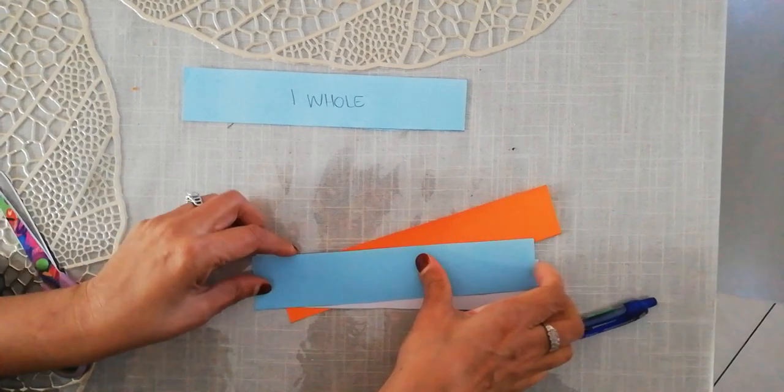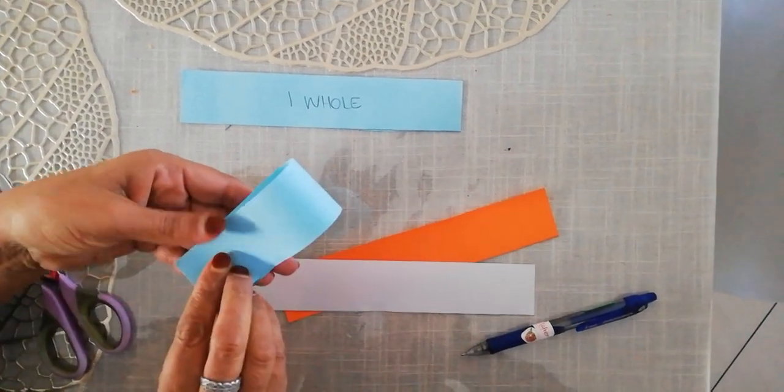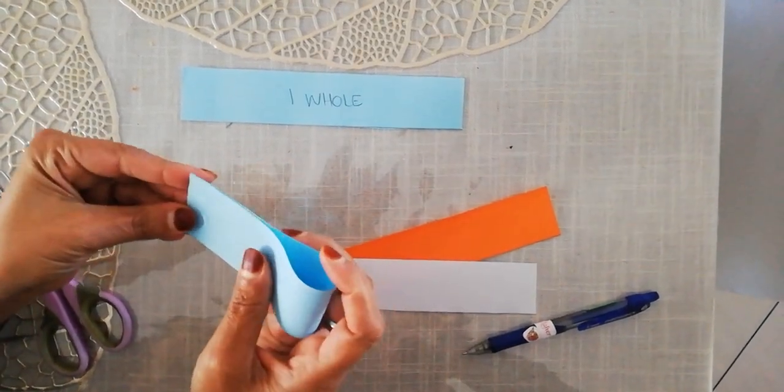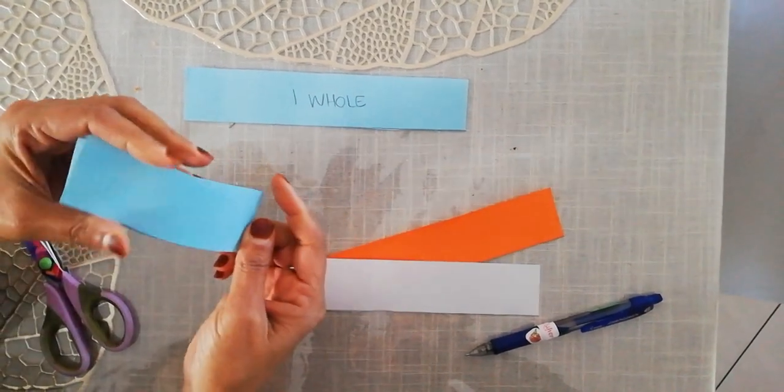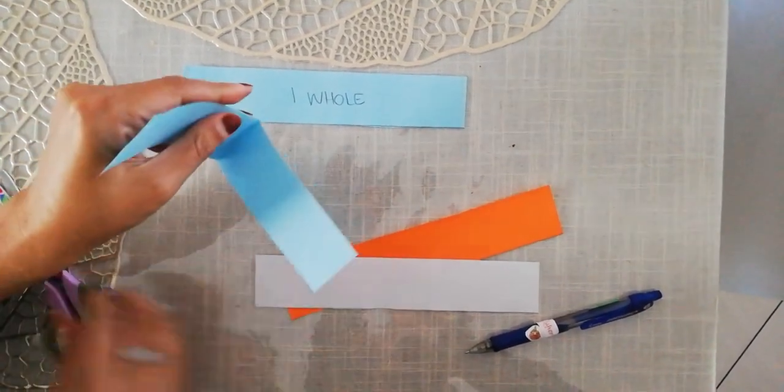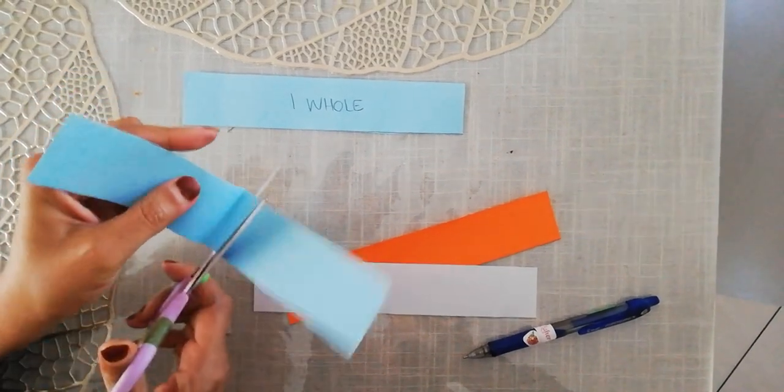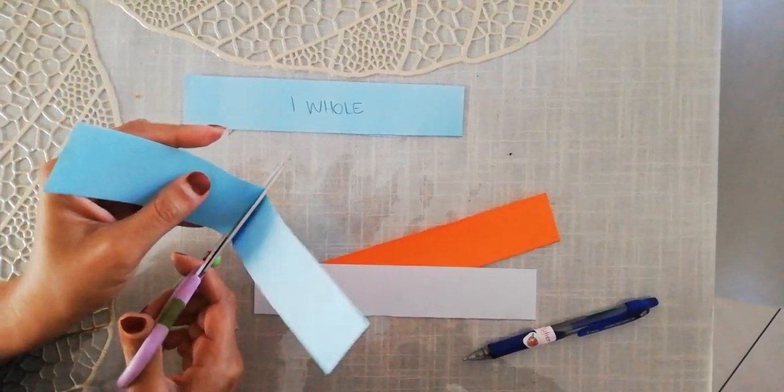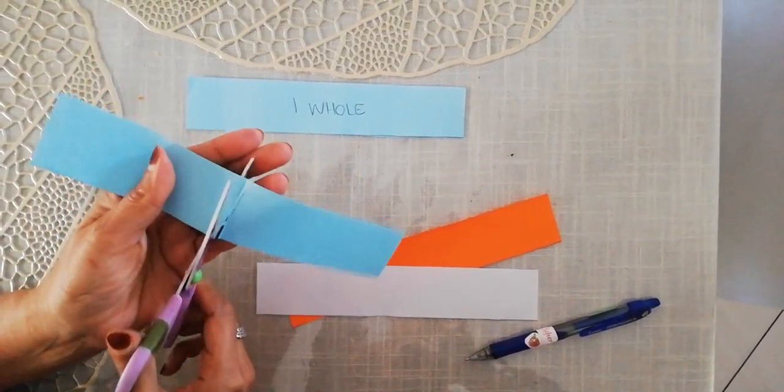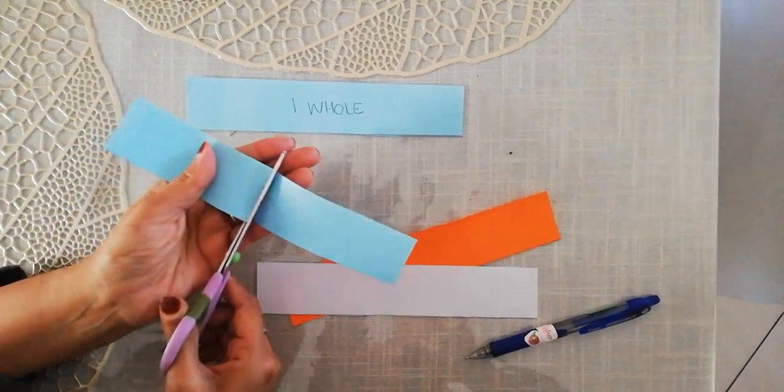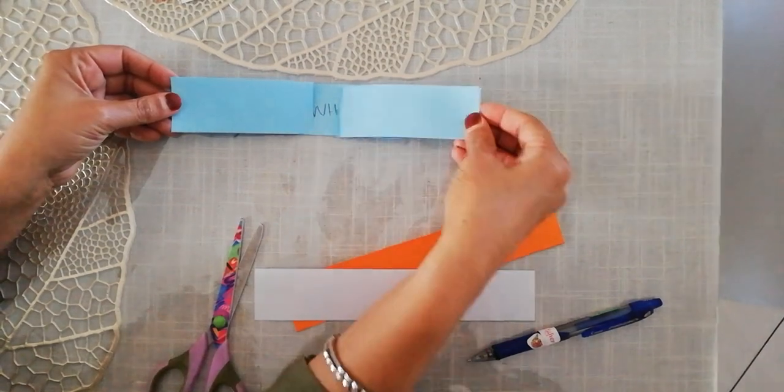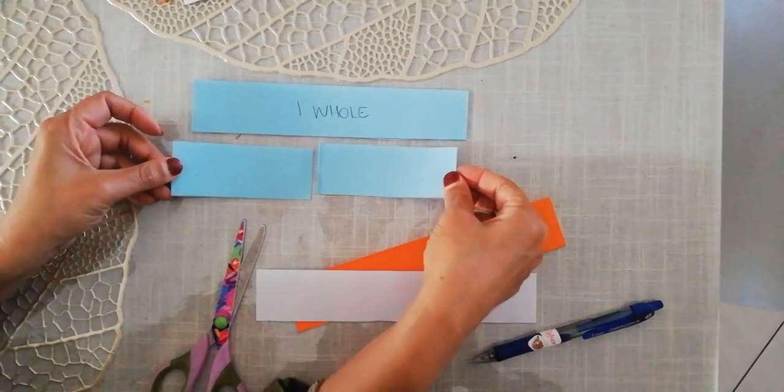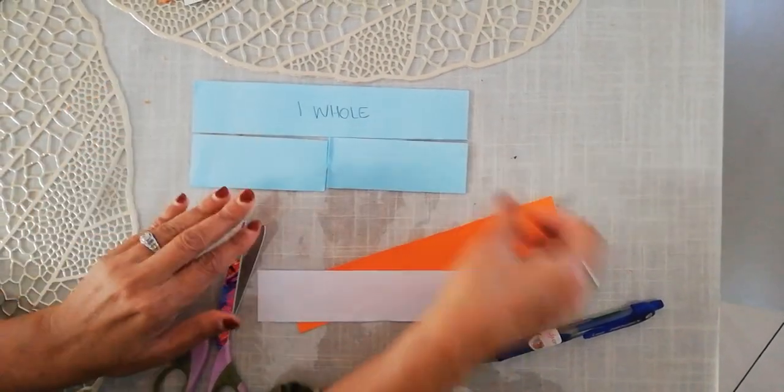I take my next strip of paper, I fold it in half, I make a line, and I cut on that line. Okay, now I'm going a bit crooked. And like you see, that my two halves will make a whole. I put it down there.